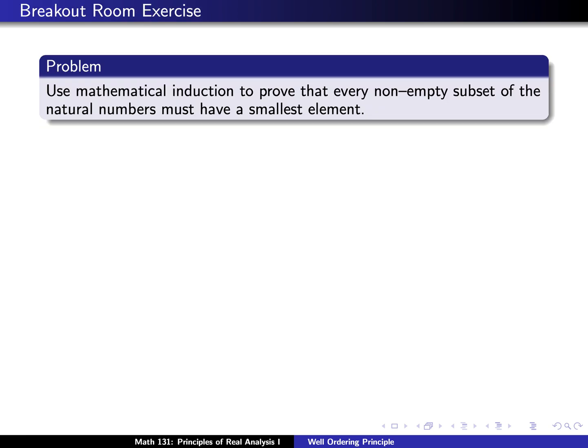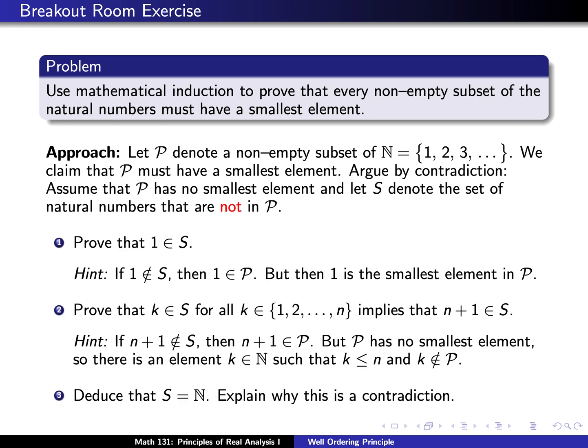Here's a quick exercise: try to figure out why exactly that statement is true. Why does the well-ordering principle hold? You can try to use mathematical induction to prove that every non-empty subset of the natural numbers has a smallest element. Let me sketch how you would do this. Let P denote a non-empty subset of the natural numbers, where we assume the natural numbers start at the integer 1. If P did not have a smallest element, we're going to find a contradiction. Let S denote the set of natural numbers that are not in P — the complement of P inside the natural numbers.